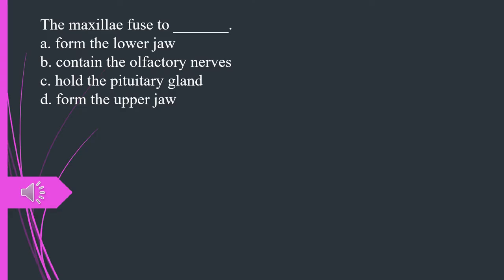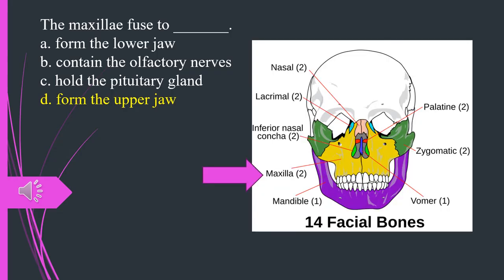The maxillae fused to what? A. Form the lower jaw. B. Contain the olfactory nerves. C. Hold the pituitary gland. D. Form the upper jaw. The answer is D. Form the upper jaw.